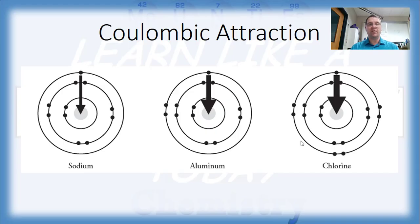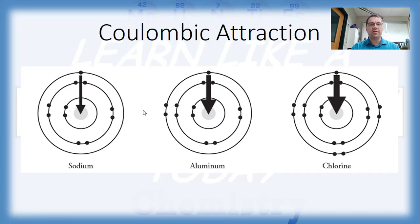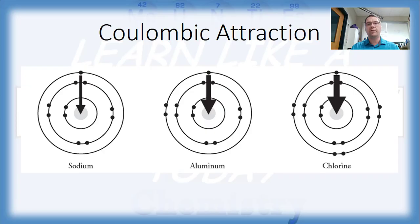Looking at specific element groupings on the periodic table in period three — sodium, aluminum, and chlorine — all three are in the same row, meaning they have the same number of energy levels and the distance effectively isn't changing. Yet there is a clear increase in Coulombic attractive force as we go from sodium (atomic number 11) to aluminum (atomic number 13) to chlorine (atomic number 17), because chlorine has the greatest number of protons. So across a given row, the greater the number of protons, the stronger the force of attraction on the electrons.